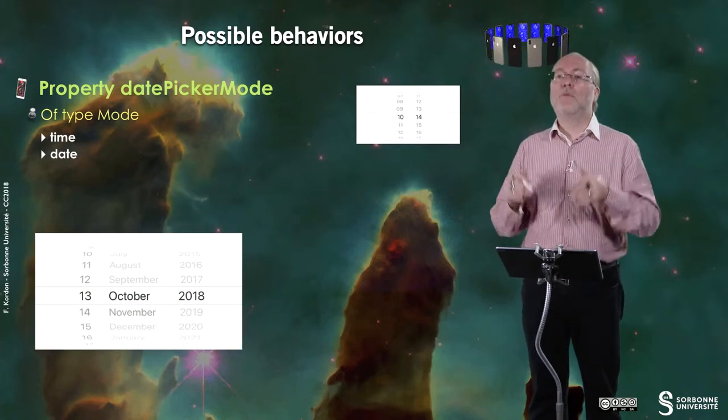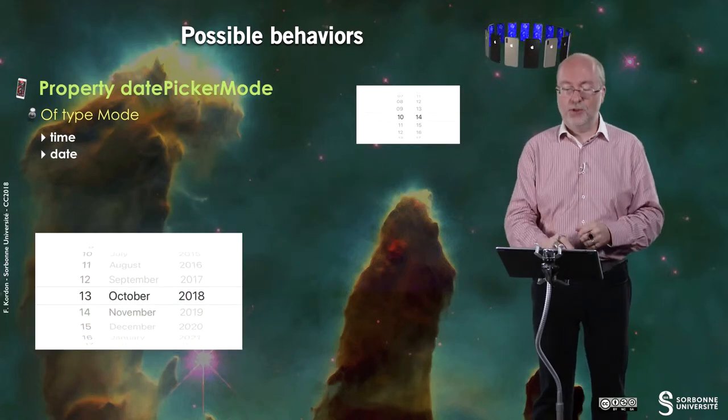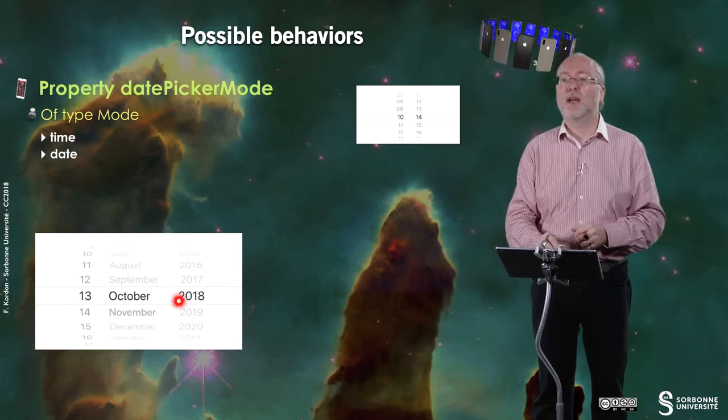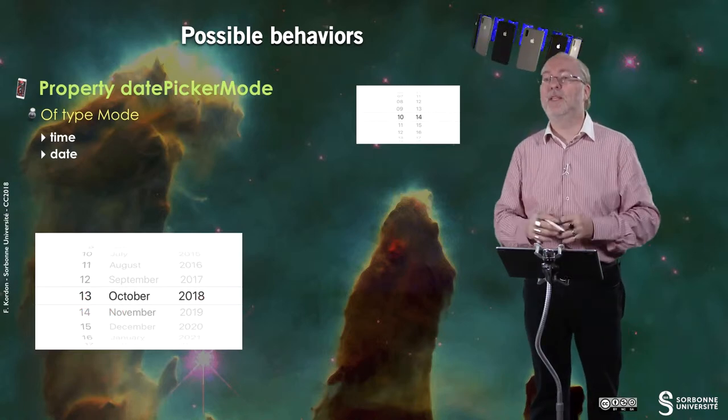If the mode is date, then you just have the day number, the month, and the year. That is automatically displayed.